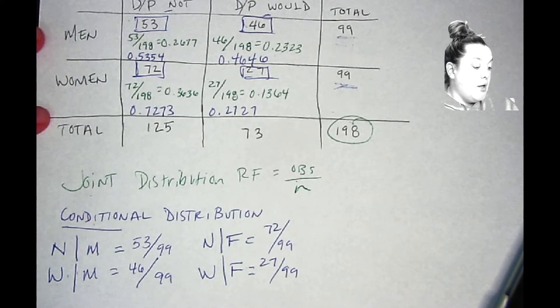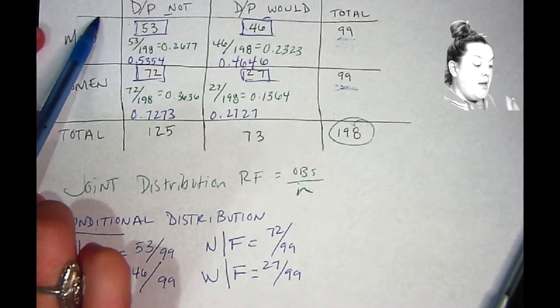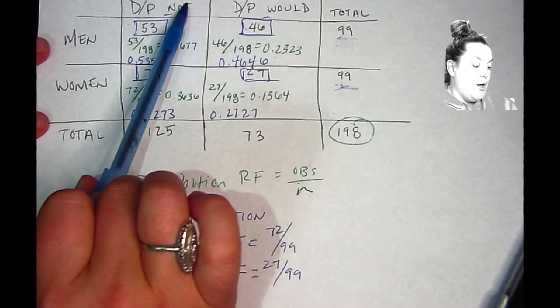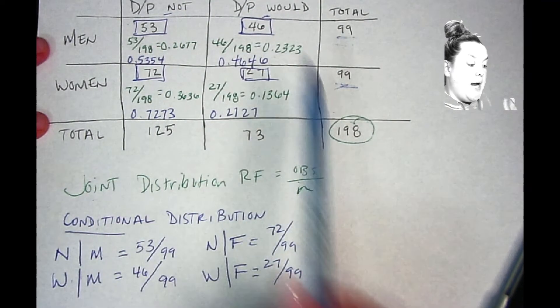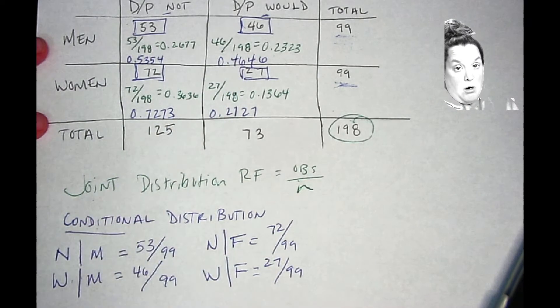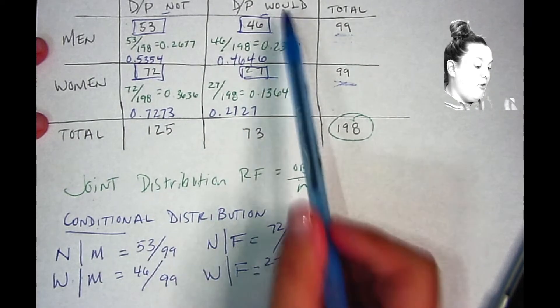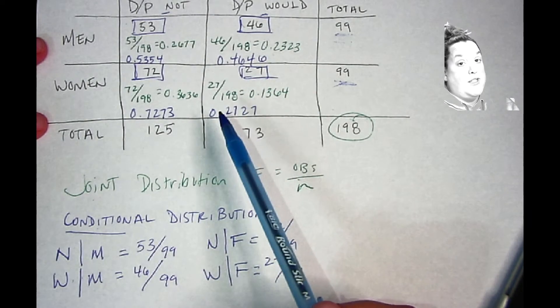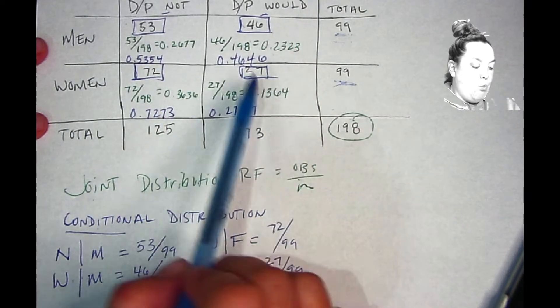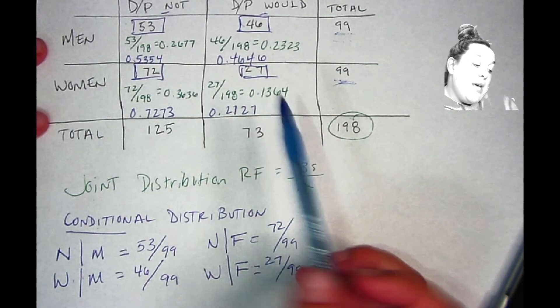However, here you can see that we have men and women, and then our response variable is would not and would ride in a driverless passenger vehicle. And when you compare these different percentages, you can see that for the would not, that's a big difference between those two. Between the would, that's a big difference. Between the not, that's a big difference.